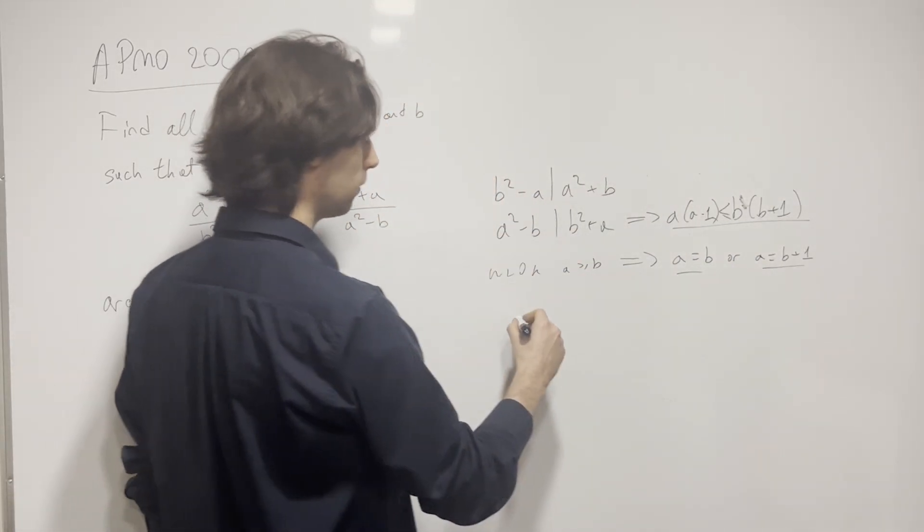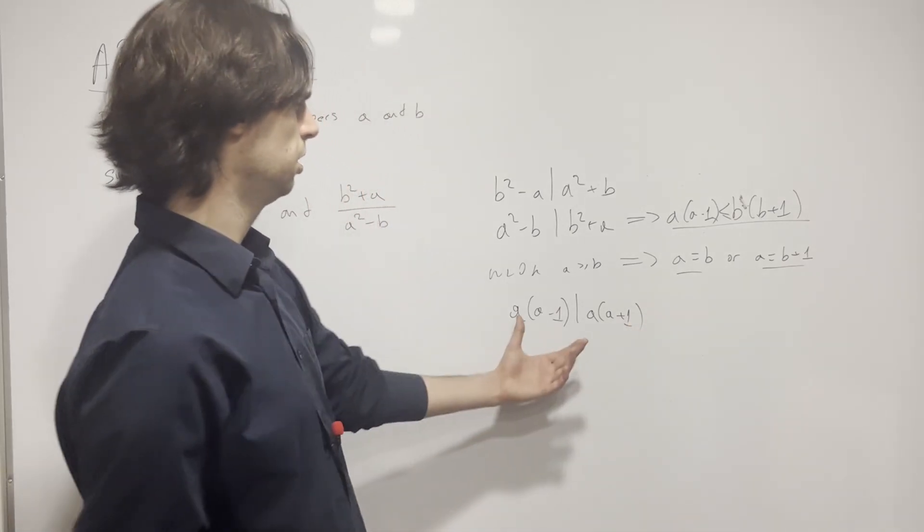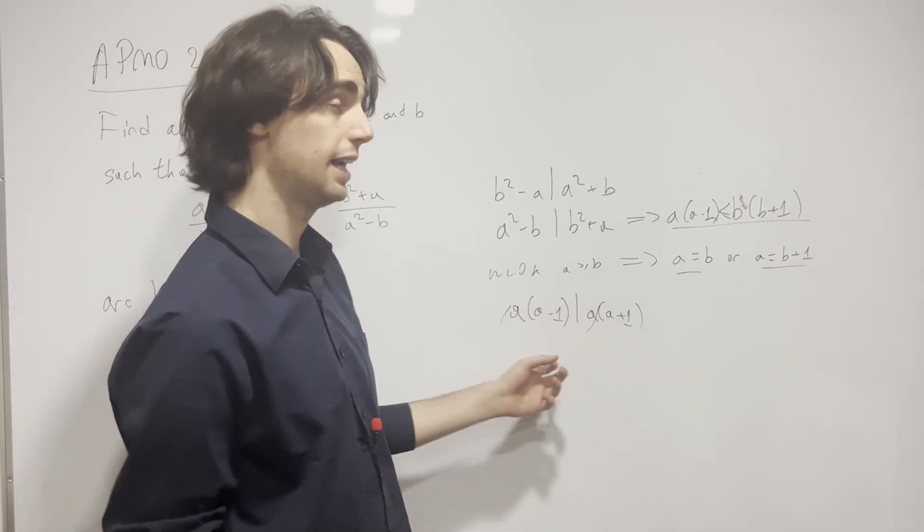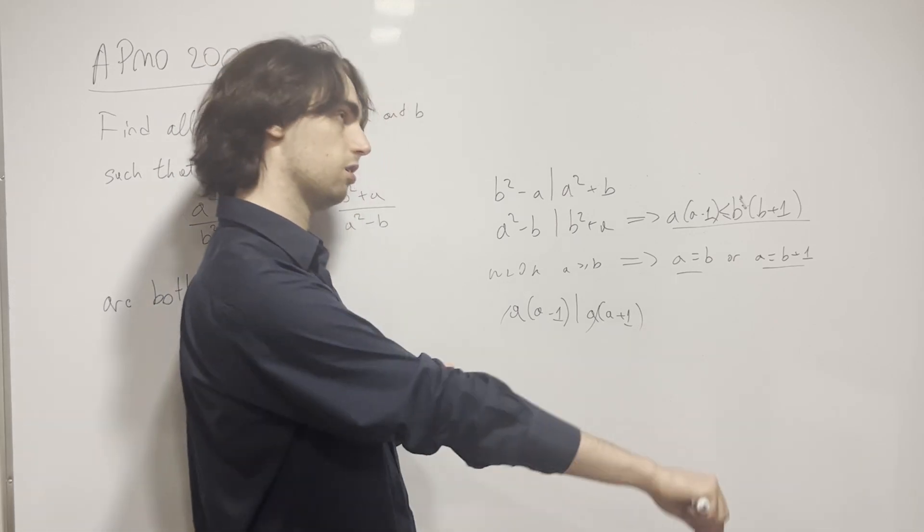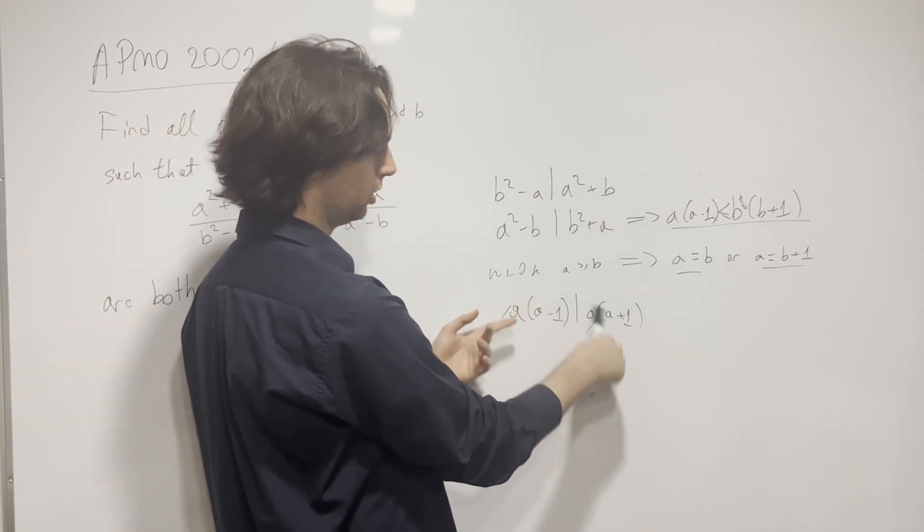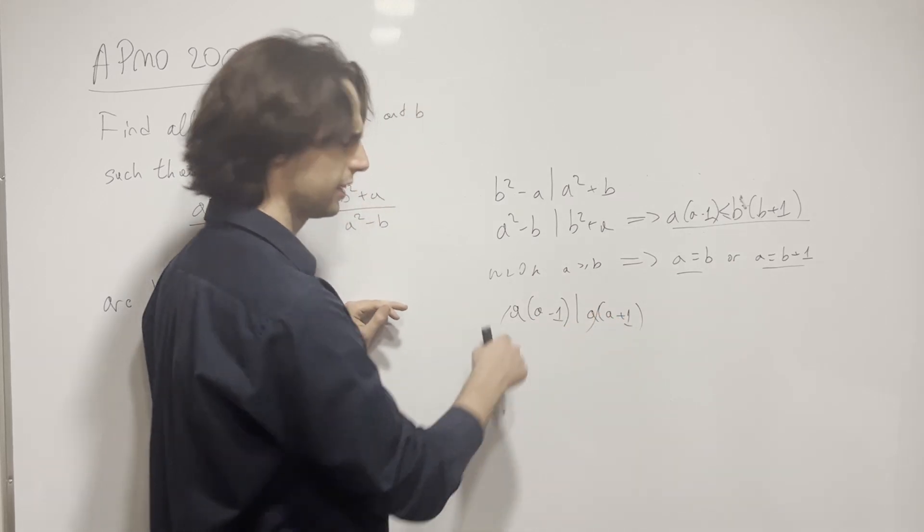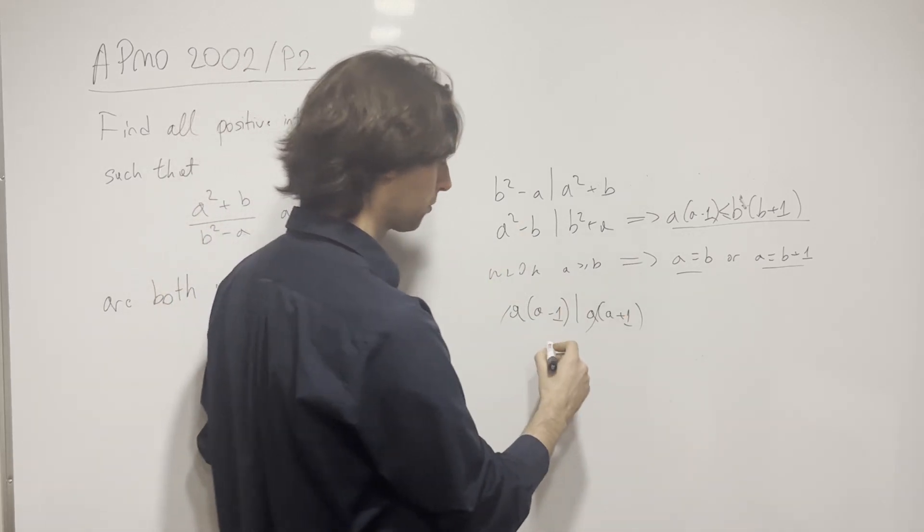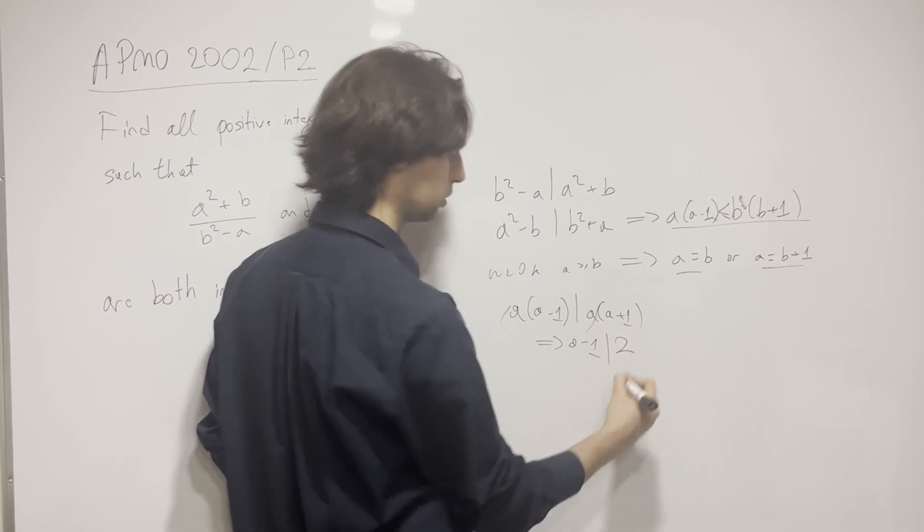If a equals b, this whole thing becomes a(a - 1) divides a(a + 1). In divisibility, you can cancel out these things. If you have ac divides ab, it's the same as c divides b. There exists a k such that k times (a - 1) equals a + 1. It's the same k, and so that's why you can cancel it.